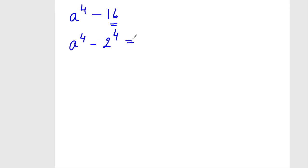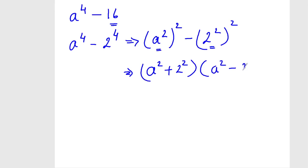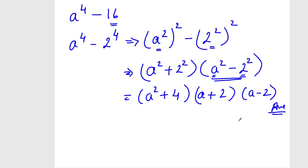When we solve this using the identity, it becomes a squared whole squared minus 2 squared whole squared. Here a value is a squared and b value is 2 squared. Applying the identity gives a squared plus 2 squared and a squared minus 2 squared. Since there is no identity for a squared plus b squared, that part stays as a squared plus 4. But for a squared minus 2 squared, we can again apply the identity, giving a plus 2 and a minus 2. So this is the complete answer.